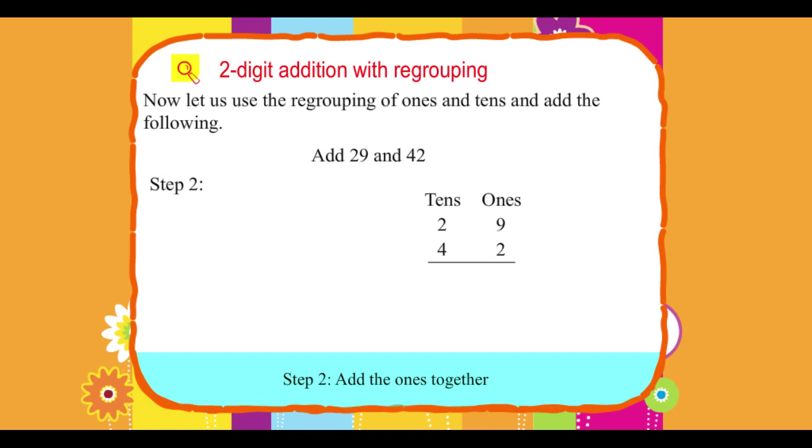Step 2. Add the ones together. Nine ones plus two ones equals eleven ones.